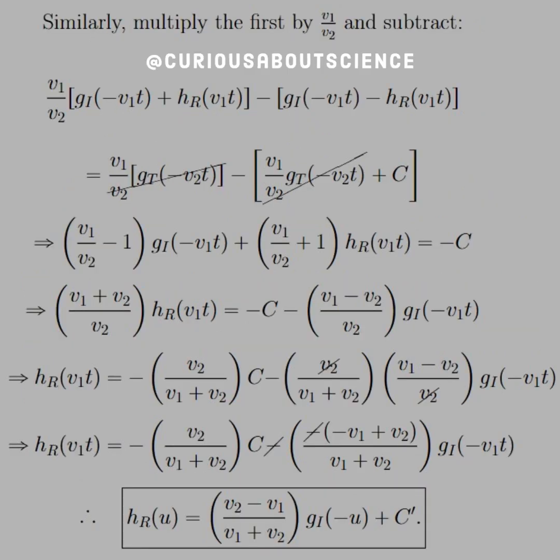Similarly, we just have to multiply the first equation by v_1 over v_2 and subtract. Again, algebra is your friend here. You see the g_T terms cancel, and we can solve this thing for h_R. Again, in terms of g_I. And we see that h_R of u is equal to v_2 minus v_1 divided by v_1 plus v_2 times g_I minus u plus C prime.